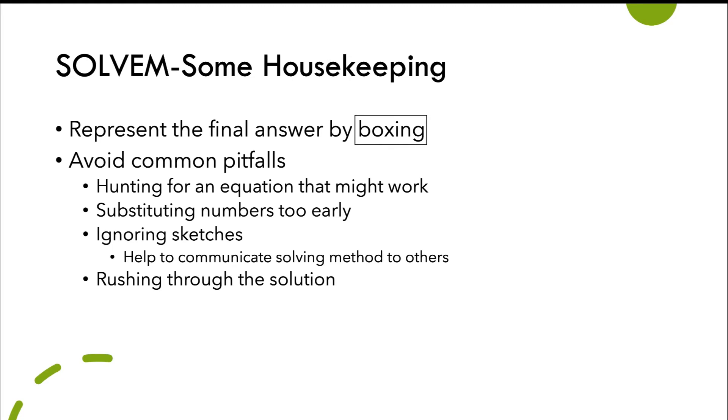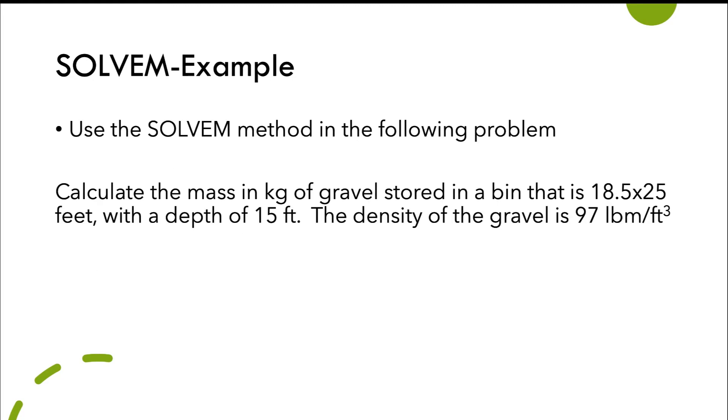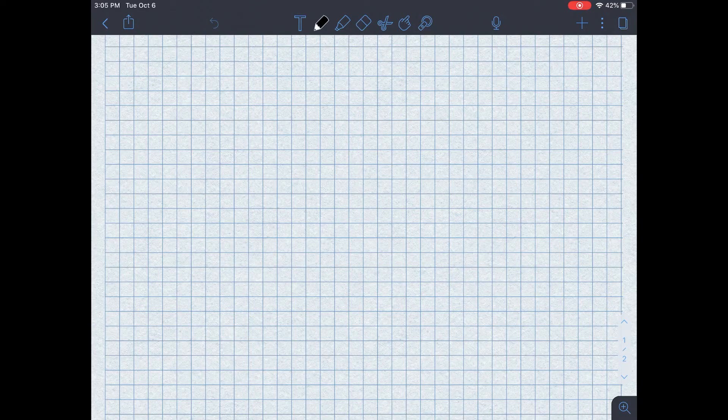I want to calculate the mass in kilograms of gravel stored in a bin that is 18.5 by 25 feet, and it has a depth of 15 feet. The density of this gravel is 97 pound mass per feet cubed. Okay, so let's look at the solution to this problem.